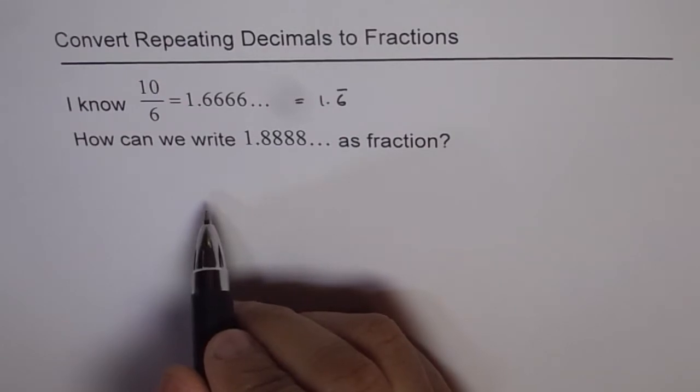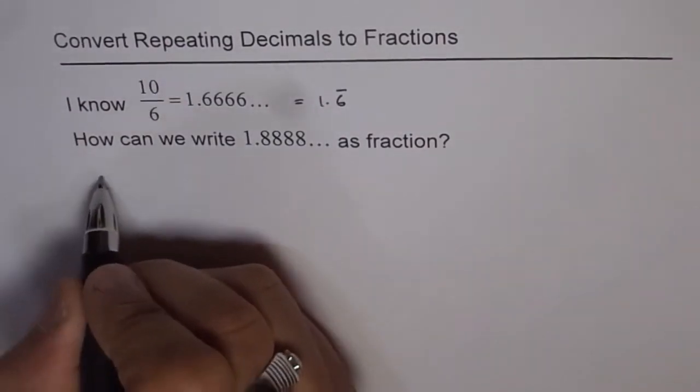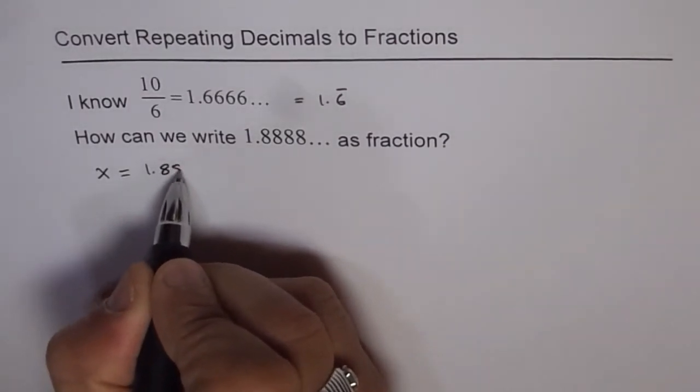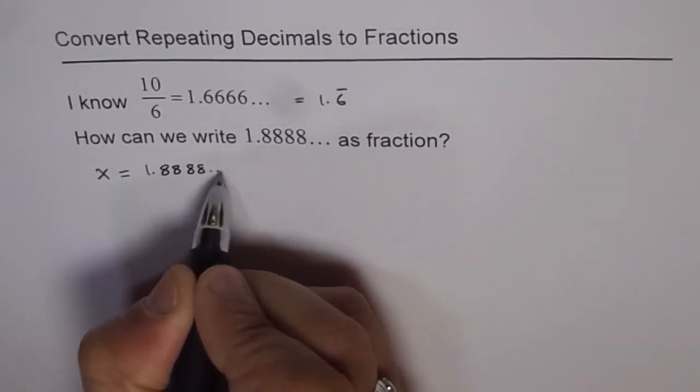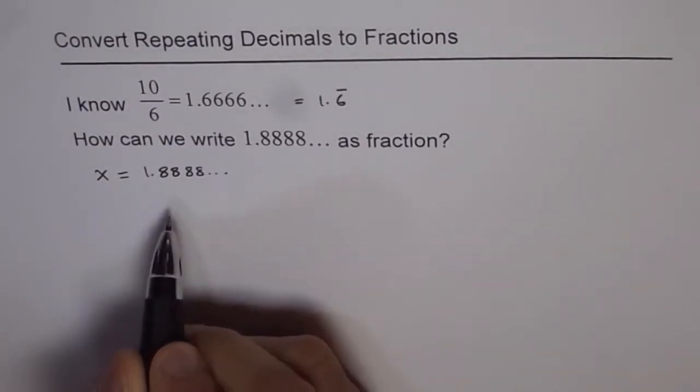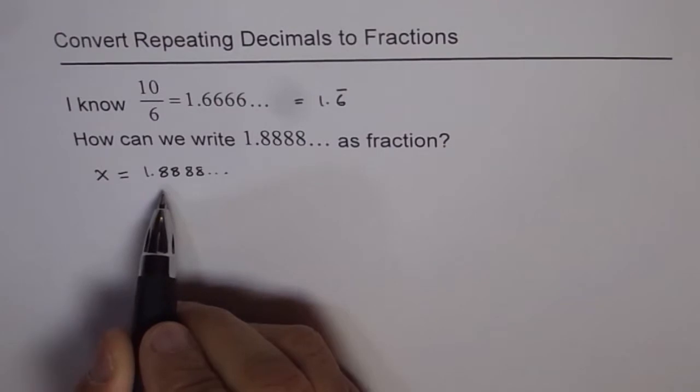We will adopt the same method, which is let x equals 1.8888 like this. Now, since we want to get rid of the numbers after the decimal, we should have another number which is similar to this.